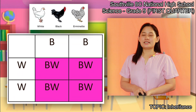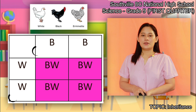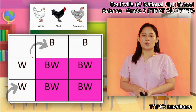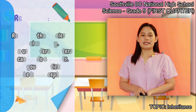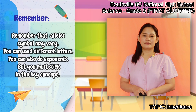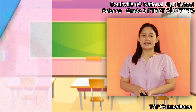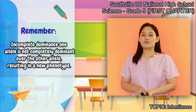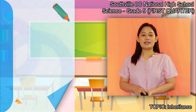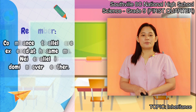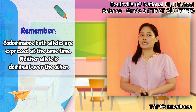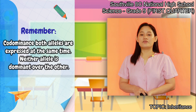Remember, the allele symbols may vary — you can use different letters or exponents, but must keep in mind the key concept. In incomplete dominance, one allele is not completely dominant over the other allele, resulting in a new phenotype. In co-dominance, both alleles are expressed at the same time, and neither allele is dominant over the other.